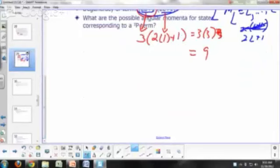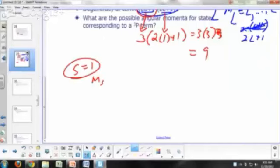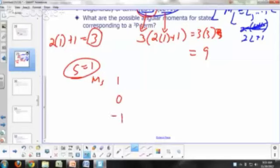Here's another way of looking at it. What are the possible values for M sub S if S equals 1? Our S is 1, right? Because 2 times 1 plus 1 is 3. That's your multiplicity. Your M sub S would be 1, 0, or negative 1.